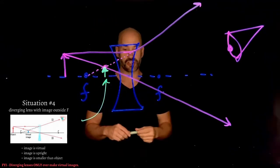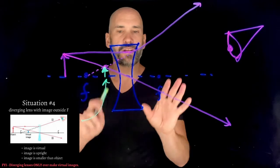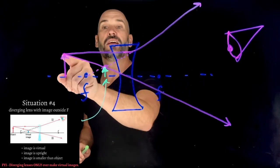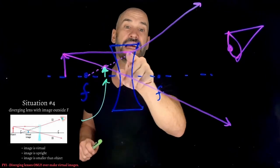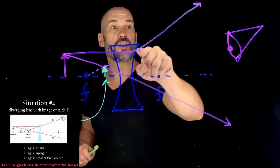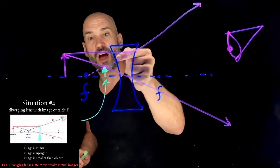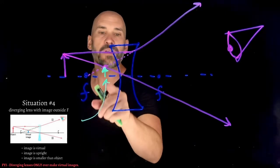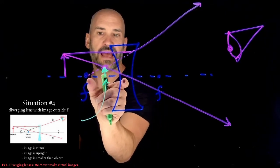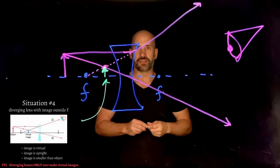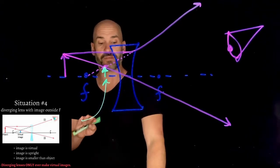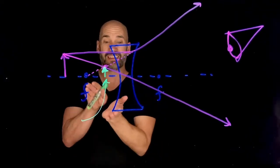In this case we have an upright virtual image that is smaller than the original object. Diverging lenses are important for corrective lenses. Note that the first special ray — the one going in parallel — instead of converging to the focal length, cuts away as if coming from the focal length. The image formed by a diverging lens is often between the lens and the focal length.